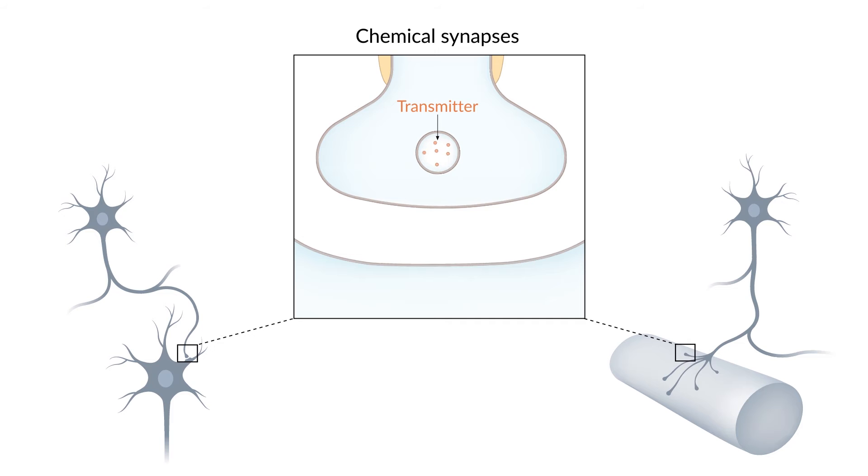Transmitters are synthesized in the soma of the neuron and transported along the axon to the presynaptic terminal. Here, they're stored in vesicles in close proximity to the presynaptic membrane, ready for release. So, how exactly are they released?